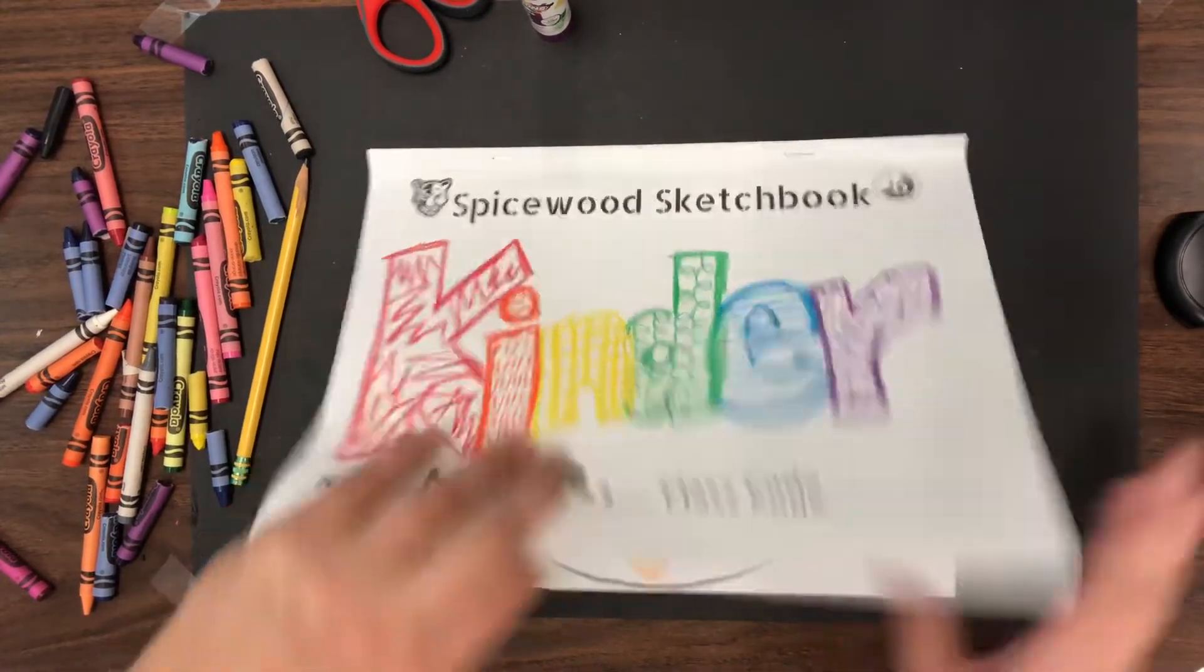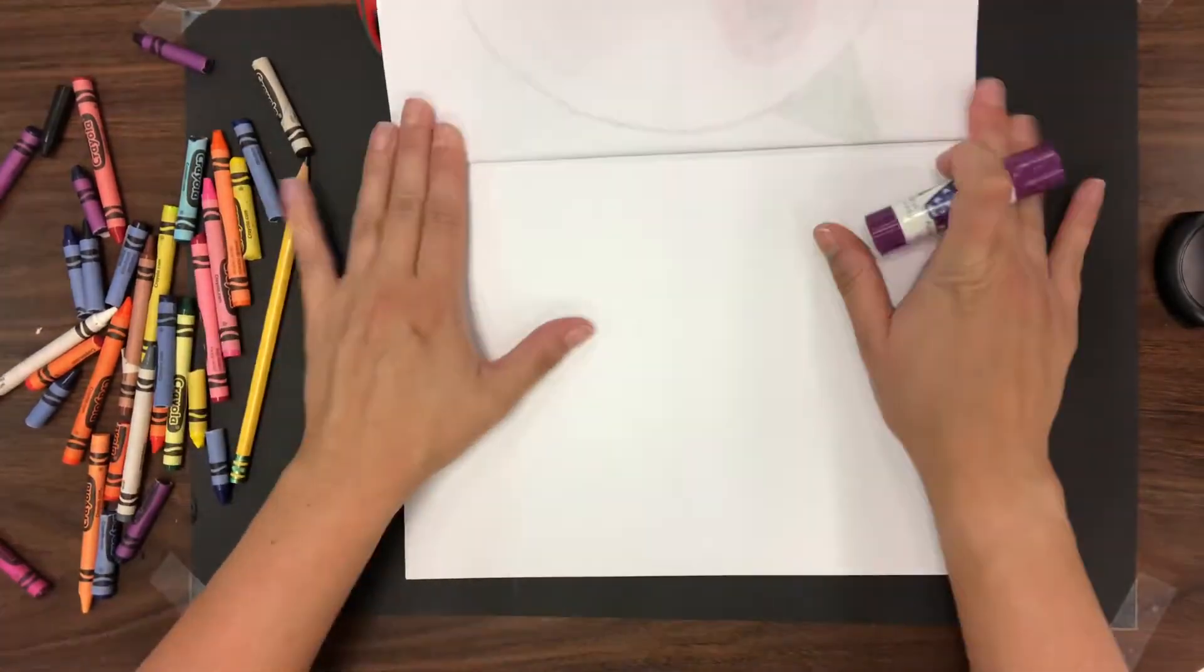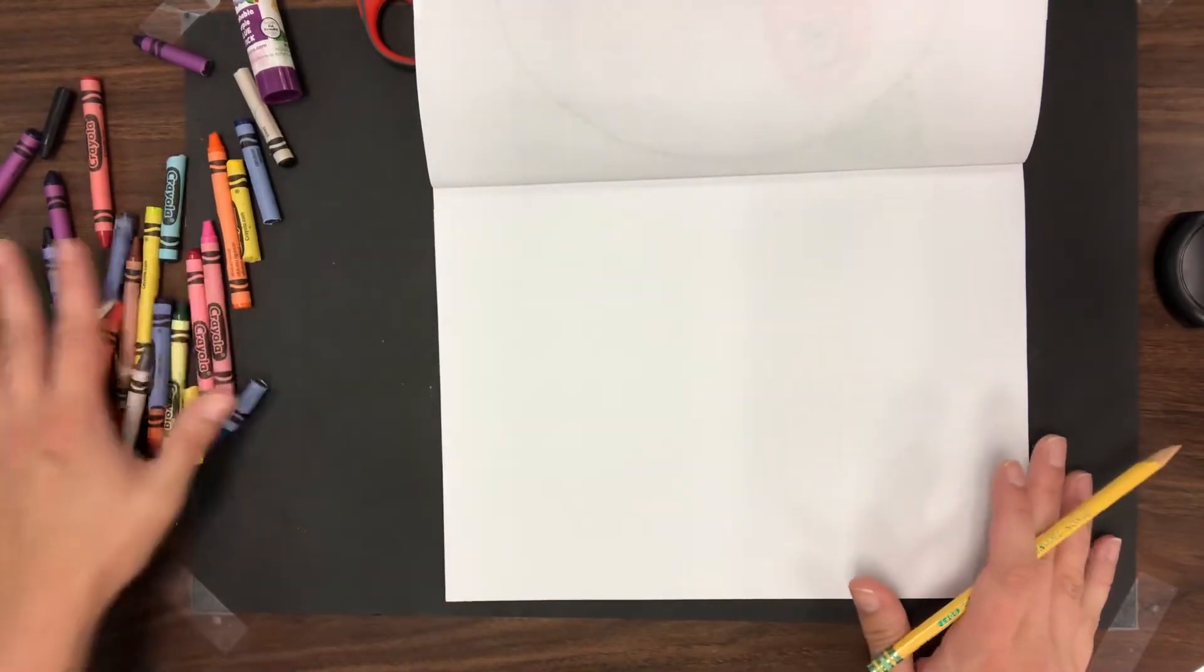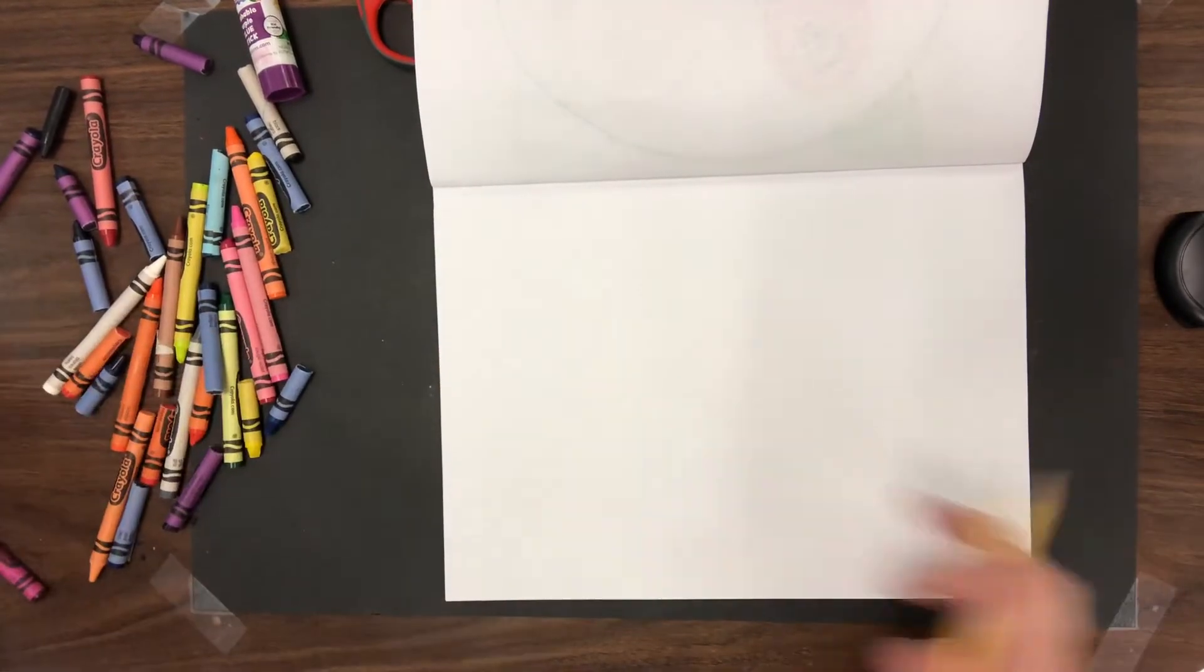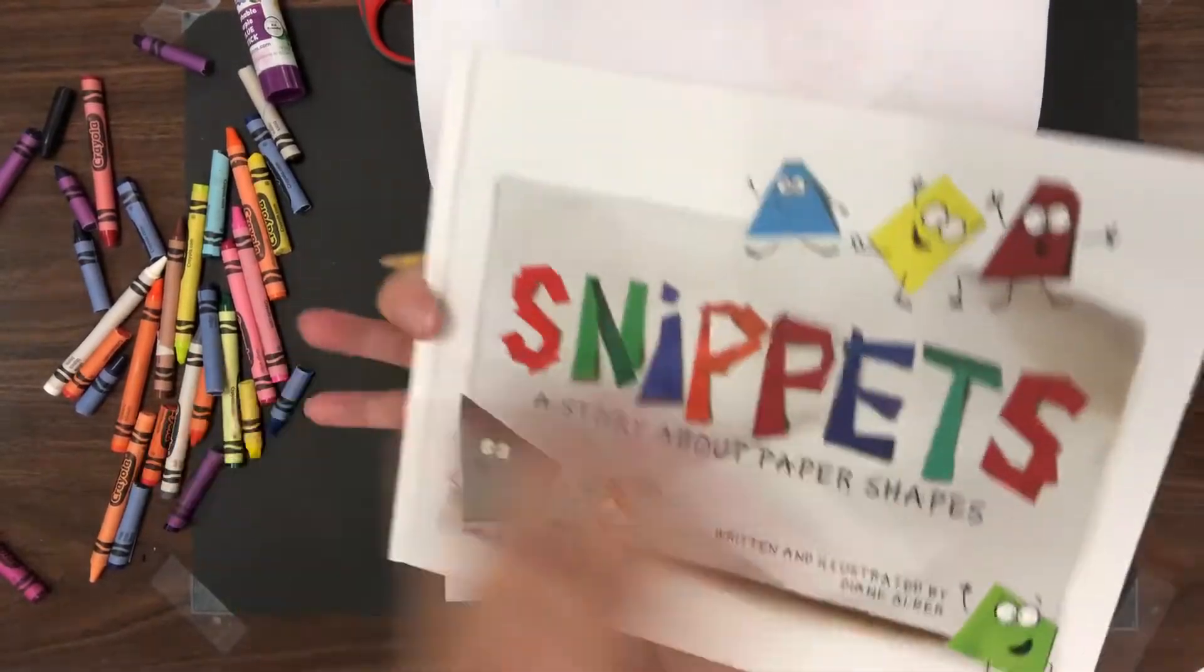I'm gonna open up - here's what I did last week with my snippet shapes. I'm gonna go to a new piece of paper and make a plan for what I want to make inspired by our Snippets book. In the book they made a lot of houses, didn't they?